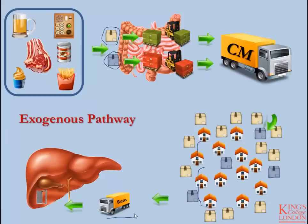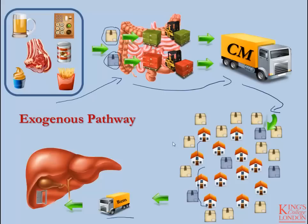This is a general analogy for the exogenous pathway. Raw material comes from outside the body, enters the gut, enters the enterocytes, gets packaged into chylomicrons, chylomicrons are secreted into circulation, delivered to the tissues, and these remnants are then taken up by the liver and removed from circulation.